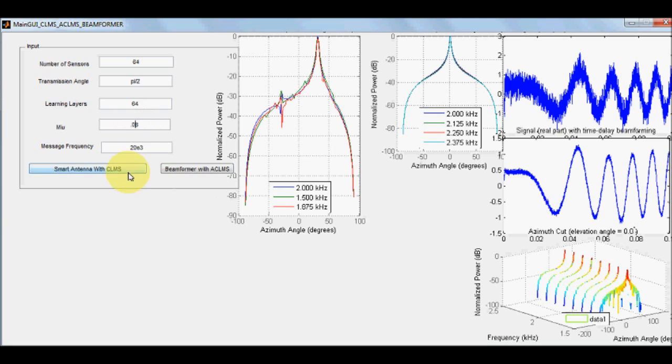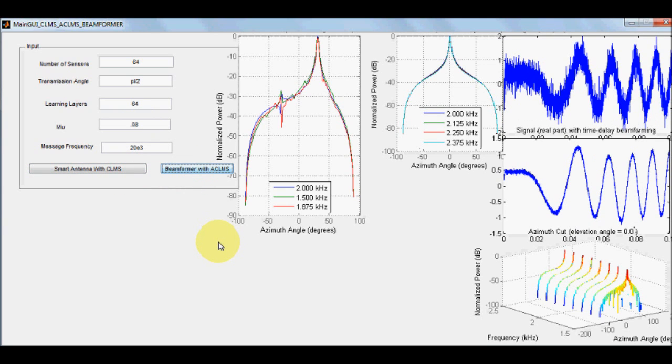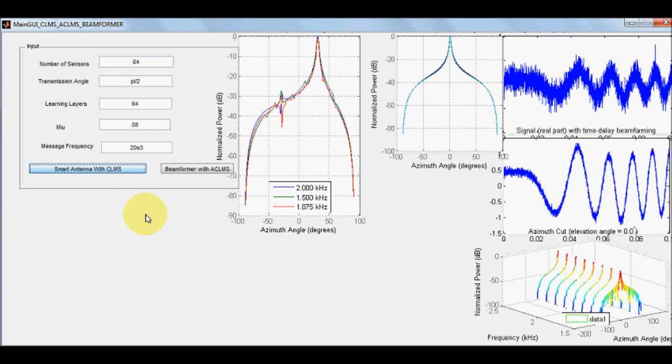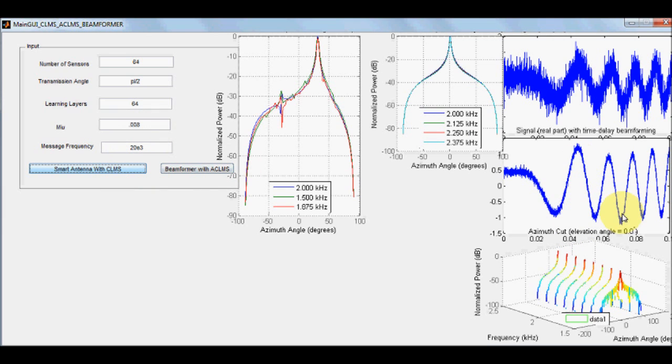Whereas if you change the learning rate, the signal is received with different amplitude. However, still the variations will be bit more minimum. As your learning rate keeps increasing, the smart antenna keeps performing better, the noise gets reduced, you get a much sharper peak.